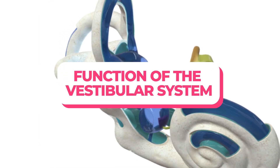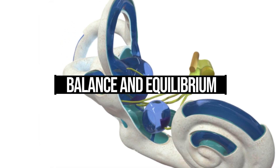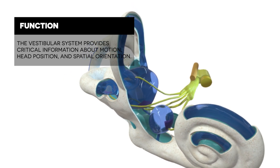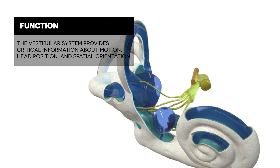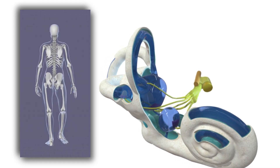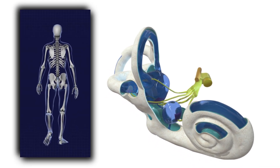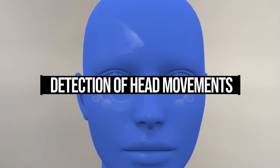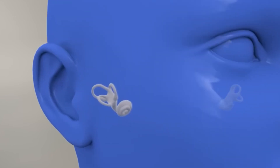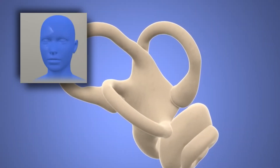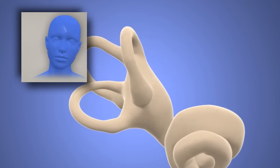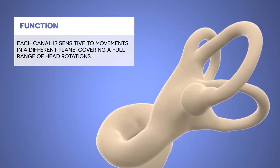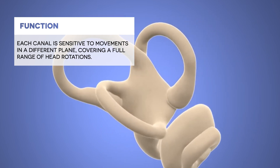The vestibular system provides critical information about motion, head position, and spatial orientation, helping to maintain balance and stabilize the eyes and body during movement. The semicircular canals detect rotational movements — like turning the head side to side, nodding, or tilting — with each canal sensitive to movements in a different plane, covering a full range of head rotations.